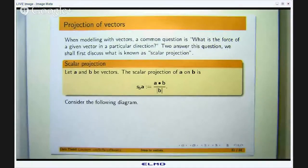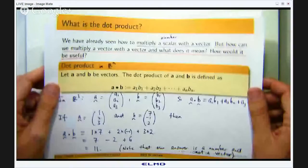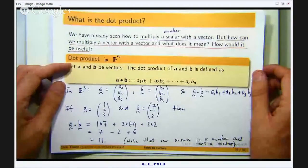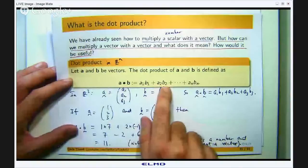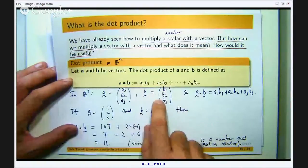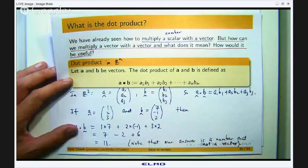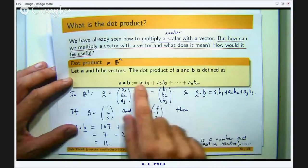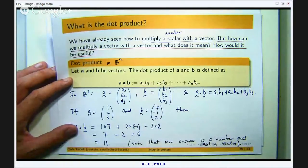Just to refresh your memory, in previous videos I talked about the dot product of two vectors where you multiply the corresponding components together and you add up the products to form some number which is known as the dot product.